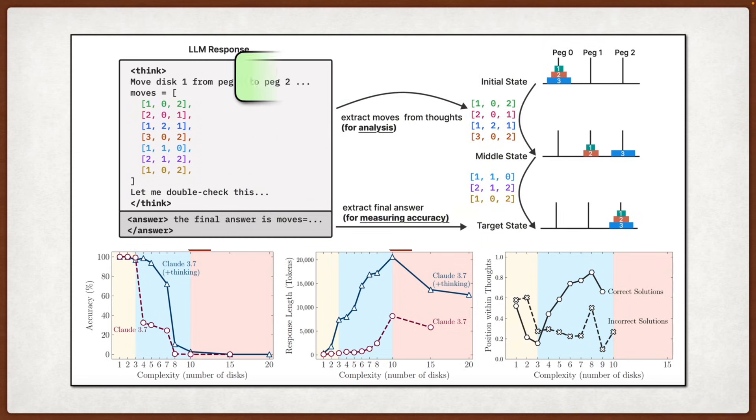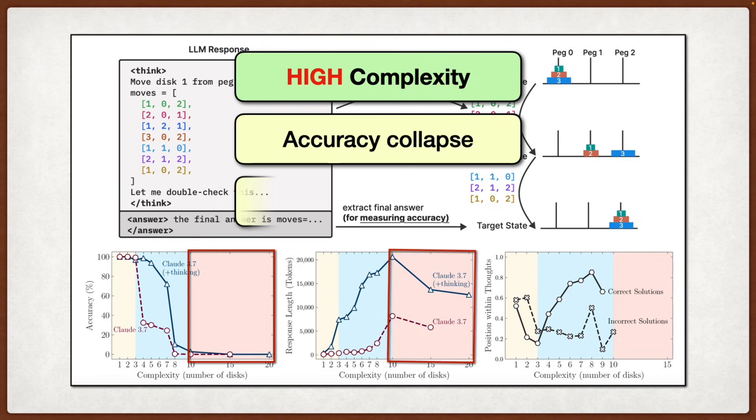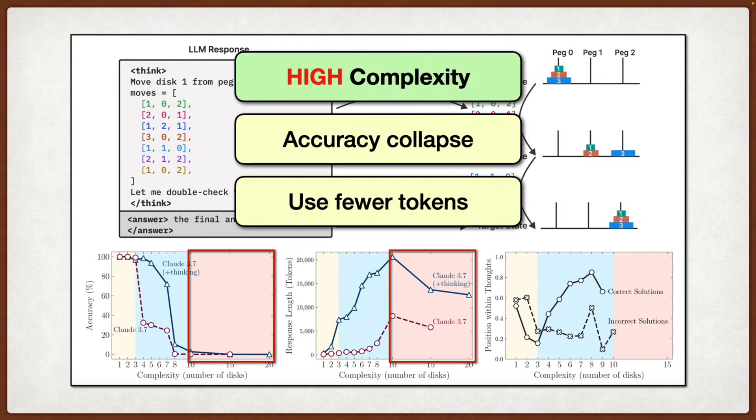But then in the high-complexity regime, both types of models completely collapse to zero accuracy. And here's the weird part, the reasoning models actually start using fewer thinking tokens as problems get harder, despite having plenty of token budget available. This last finding is particularly troubling because it suggests these models somehow know when a problem is too hard and just give up rather than trying harder.